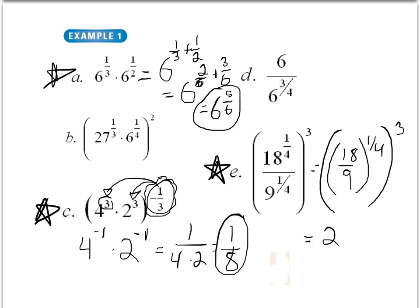18 over 9 gives us 2, then we're going to have raised to the 1 fourth, then outside of that we're going to have our cubed. Our exponent is being distributed to that other exponent, so our final answer is 2 to the 3 fourths.